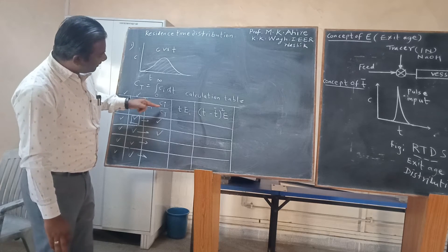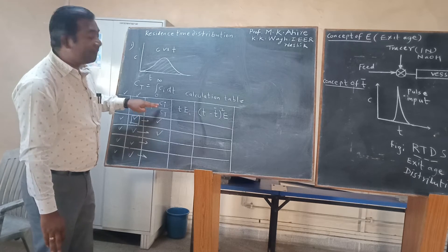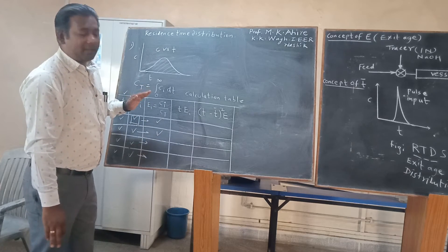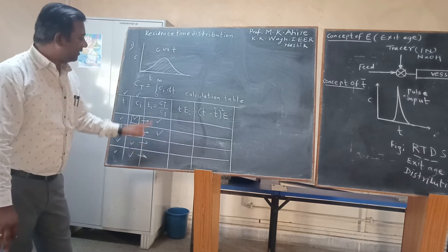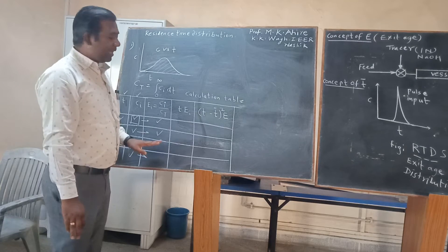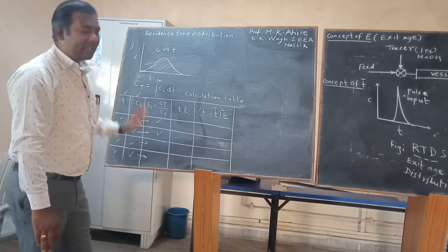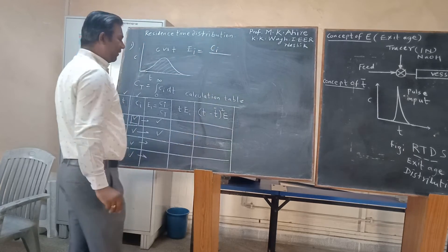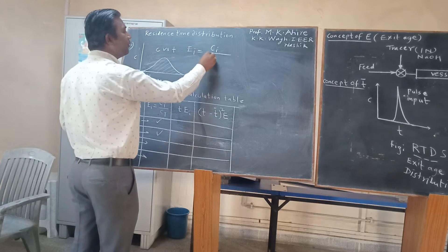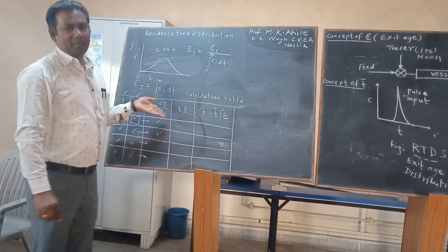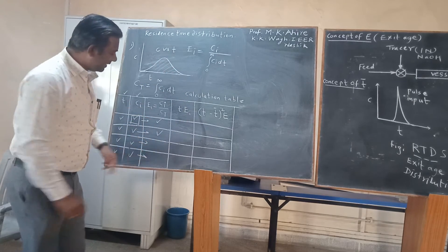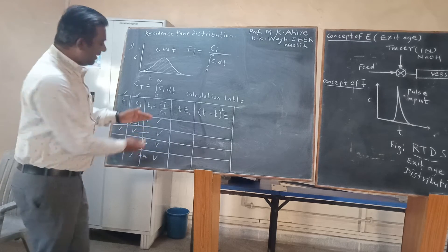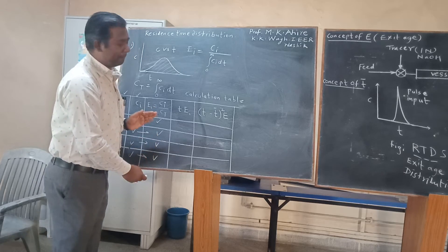What we are trying to get is the fraction of material coming out of the reactor divided by the total amount of tracer material. This indicates the exit age — that is, how much time every molecule of the tracer material has spent within the reactor. The formula for E is very simple: individual concentration divided by total concentration, where total concentration is the integral from 0 to infinity of C(t) dt. This is the exit age distribution, which is part of the residence time distribution.